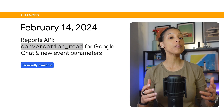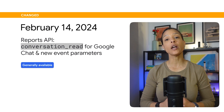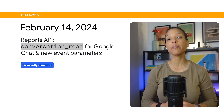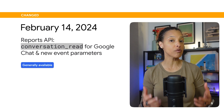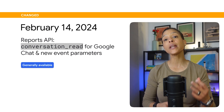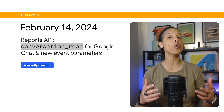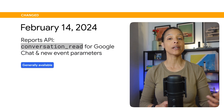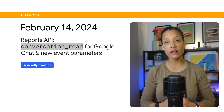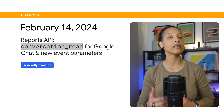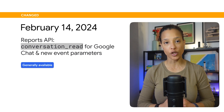Please see the links in the description to access comprehensive lists of these new metrics. For the Reports API, a new event type, ConversationRead, has been added to Google Chat along with 4 new event parameters to Activities.List and Activities.Watch.